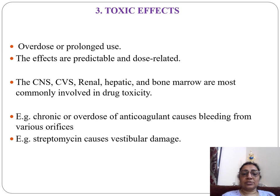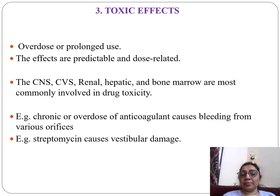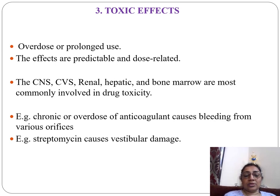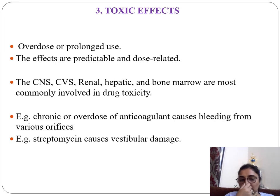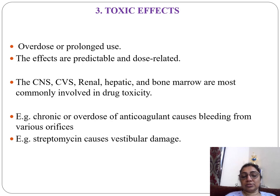Toxic effects occur due to overdose or prolonged use of a drug. These effects are predictable and dose-related. The systems most commonly involved in toxicity are the CNS, CVS, renal, hepatic, and bone marrow. Examples include bleeding from various orifices due to overdose of anticoagulants, and vestibular damage caused by streptomycin.